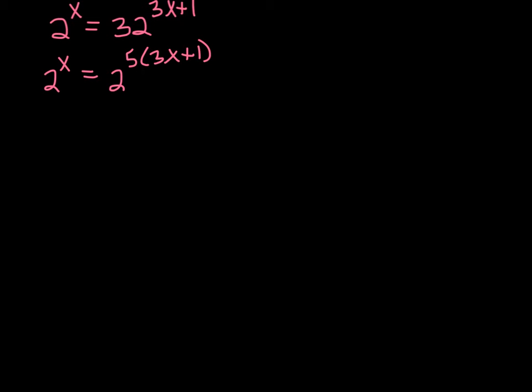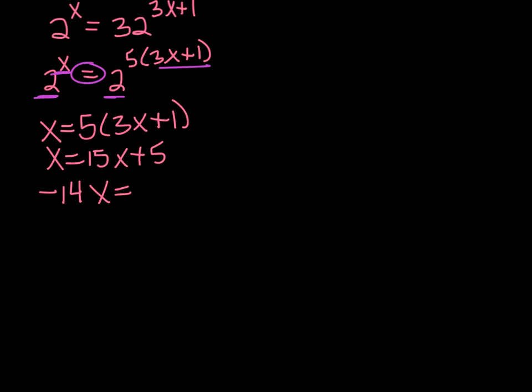Once you have like bases, if bases are alike, then the exponents have to be alike. That's what equals means. So now I can say x equals 5 times 3x plus 1. x equals 15x plus 5. x minus 15x would be negative 14x equals 5. x equals 5 over negative 14.